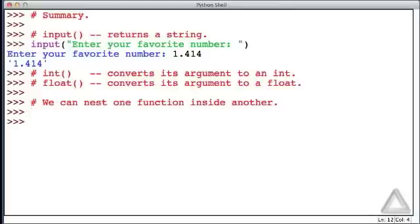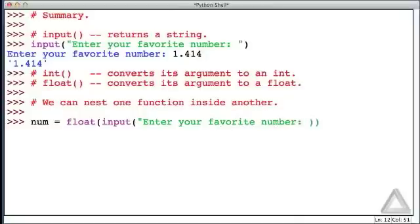As an example of this, let's say we'll take the identifier num and we will set that equal to whatever the float function returns, and its argument will be whatever this input function returns after we prompt the user with enter your favorite number. Hitting return now, we see that prompt.